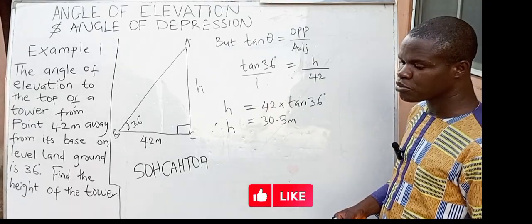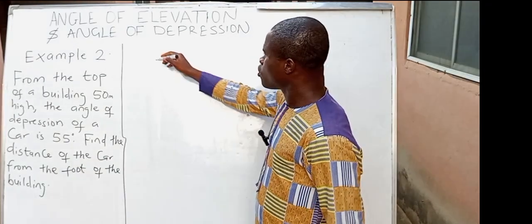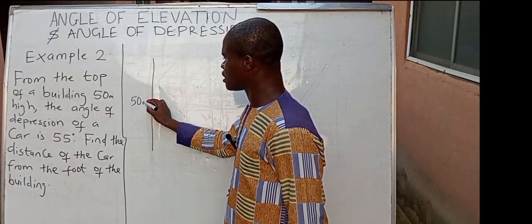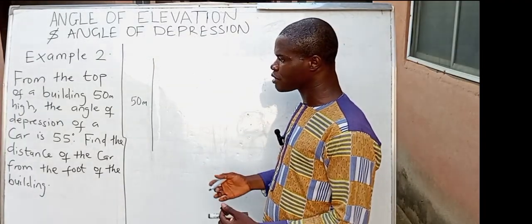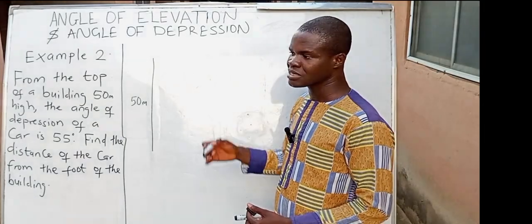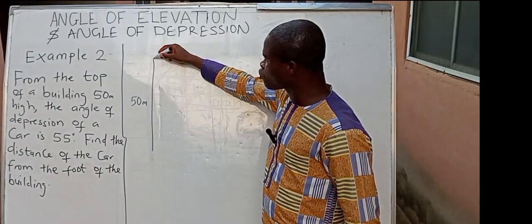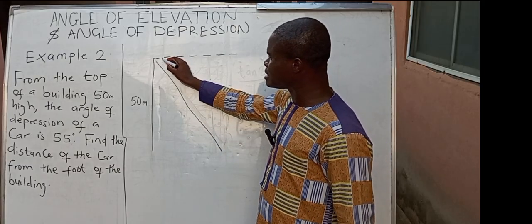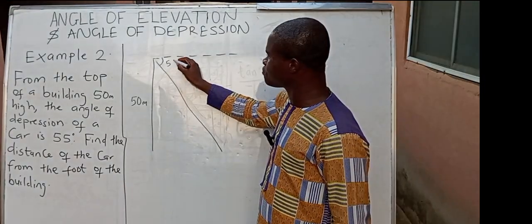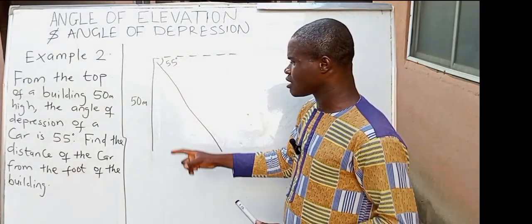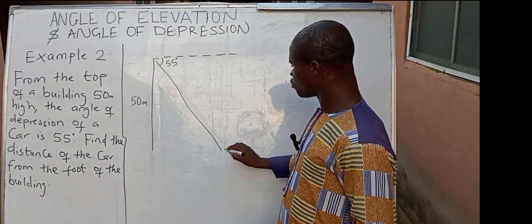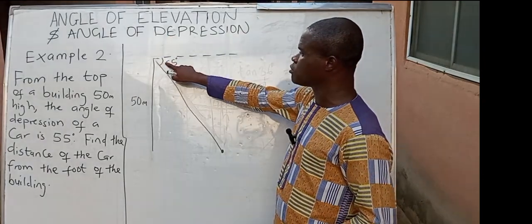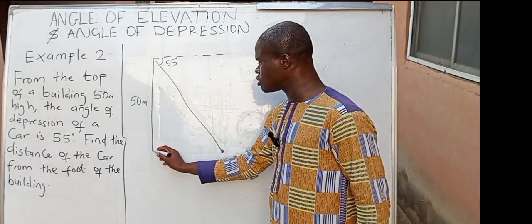Let's take example number 2. The question says: from the top of a building 50 meters high, let's represent our building with a vertical line, and the height of this building is 50 meters. The question says the angle of depression — once angle of depression is mentioned, the looking was downward. So first, let's figure out our normal. A downward look was made, resulting in an angle of depression of 55 degrees. Find the distance of the car from the foot of the building. Let's complete our drawing by completing our right angle triangle.